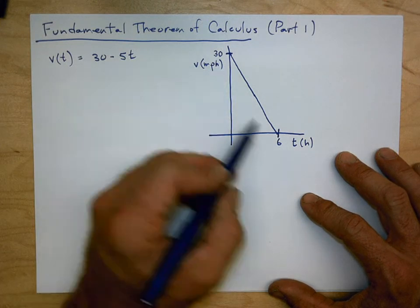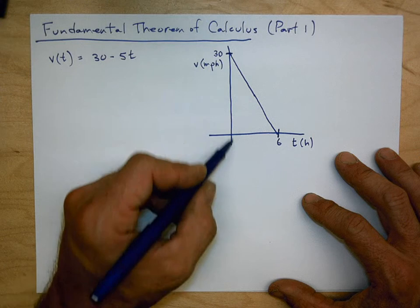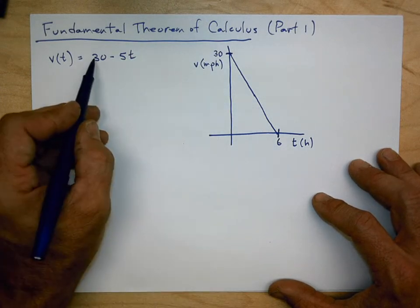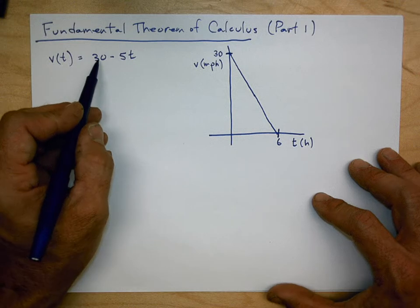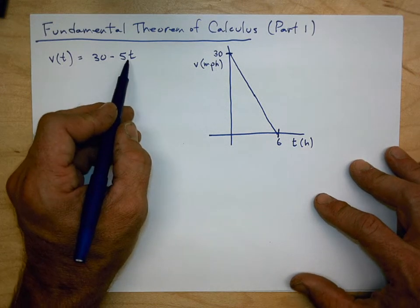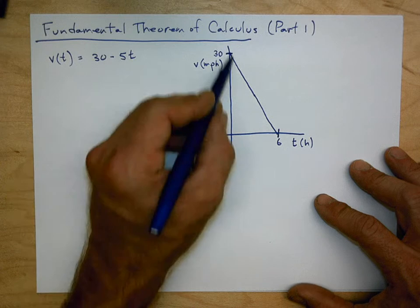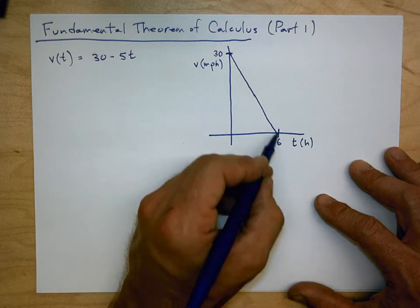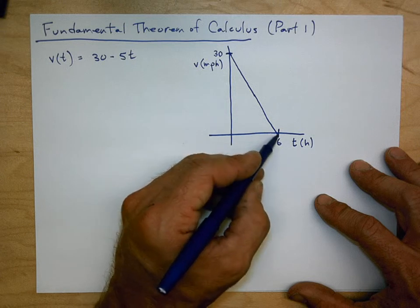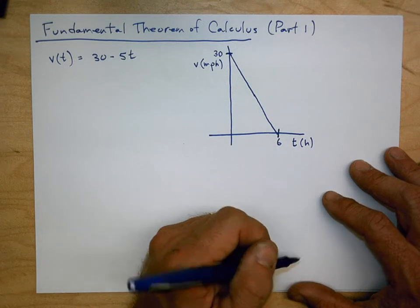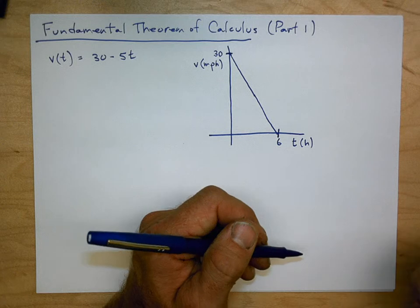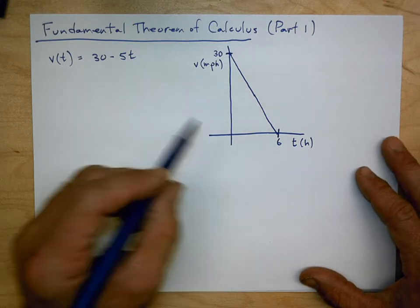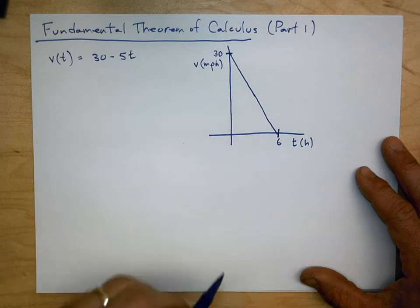I've just drawn a quick sketch of this. Here is our velocity axis in miles per hour, and our time axis in hours. We're starting at 30 miles an hour and steadily decreasing at a rate of 5 miles per hour per hour. So after 6 hours, we will have come to a complete stop. I'm going to leave it at this because I think this does what we need to develop the idea.